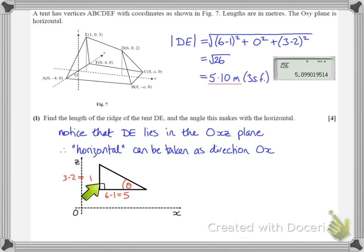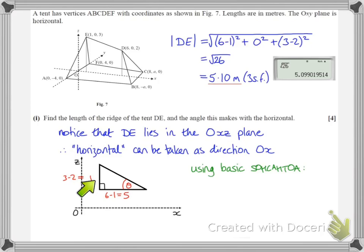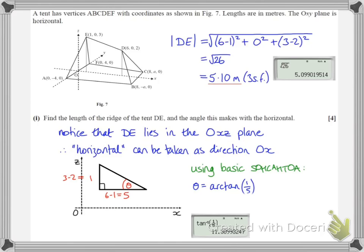The OX direction goes across the base of the triangle, giving our right angle. We have the difference in height — the difference in Z coordinates — of 1, and the distance in the X direction of 5 units. Using SOHCAHTOA, we have the opposite side and the adjacent side, so we use tan. The inverse tan of 1 over 5, evaluated on the calculator, gives 11.3 degrees, rounded to 3 significant figures.